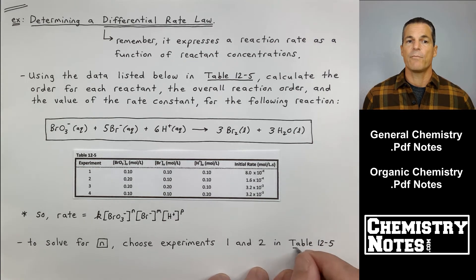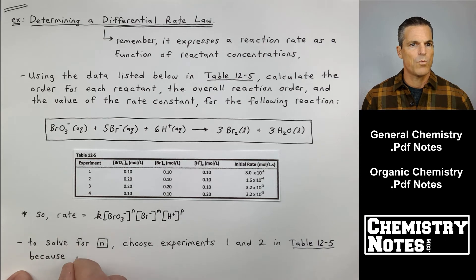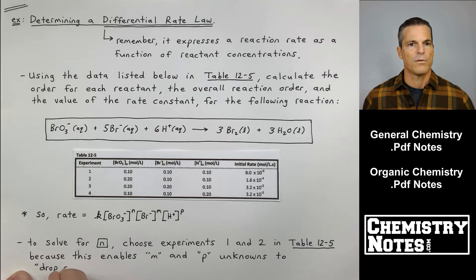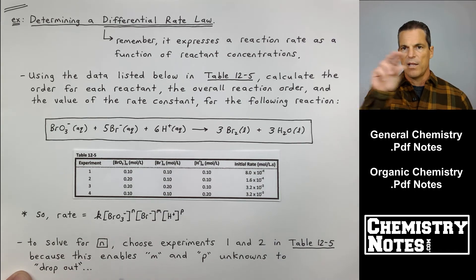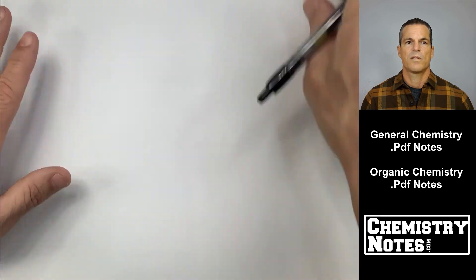This is a table with four experiments instead of three. My rate equals K times BrO3- to the N, Br- to the M, and then H+ to the P. You could use XYZ if you want. To solve for N, I'm going to choose experiments 1 and 2. Why am I choosing experiments 1 and 2? If I choose experiments 1 and 2, it will enable M, M as in Mary, and P to drop out. I'm going to basically write my rate law divided by my rate law for experiments 1 and 2.